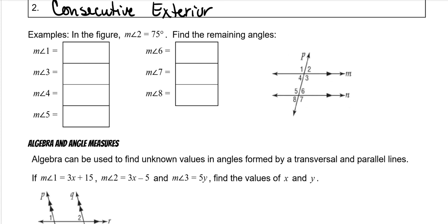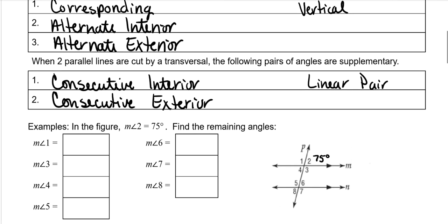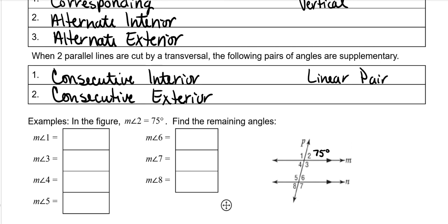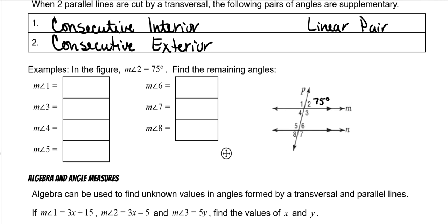So in this example, angle two is 75 degrees, and we need to fill in all of the rest. Let's fill in all the congruent ones first, because that makes it easier. All corresponding angles are congruent, which means that corresponding to two — skipping over three — angle six is also 75 degrees. Alternate interior are also congruent, so that one is also 75 degrees. Alternate exterior are congruent, so that one is also 75 degrees.